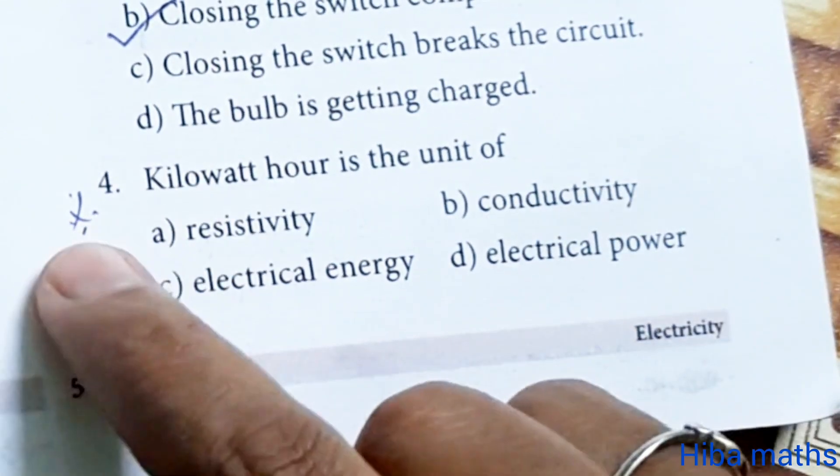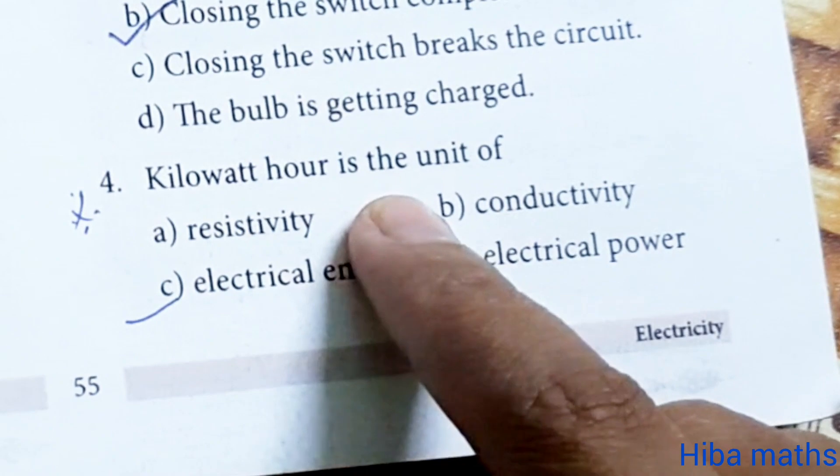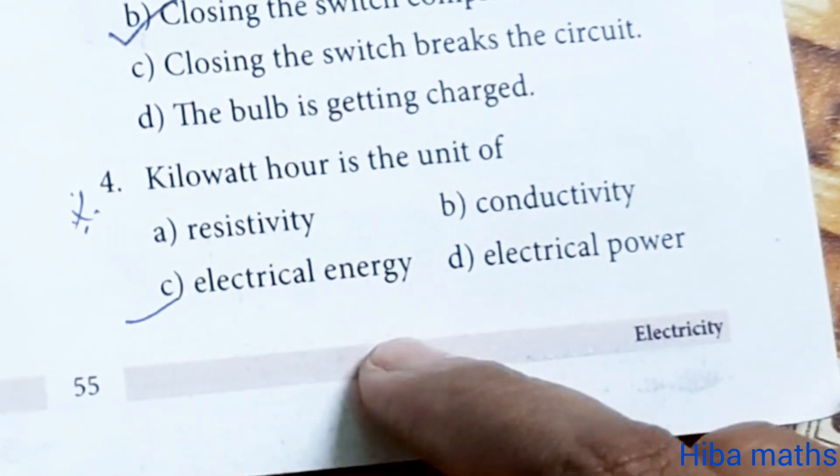Fourth question: kilowatt hour is the unit of electrical energy.